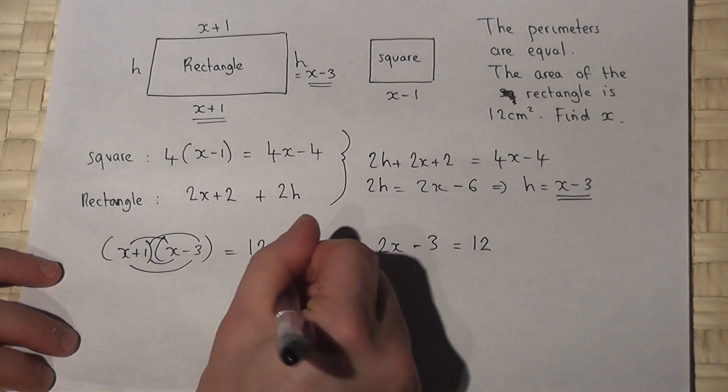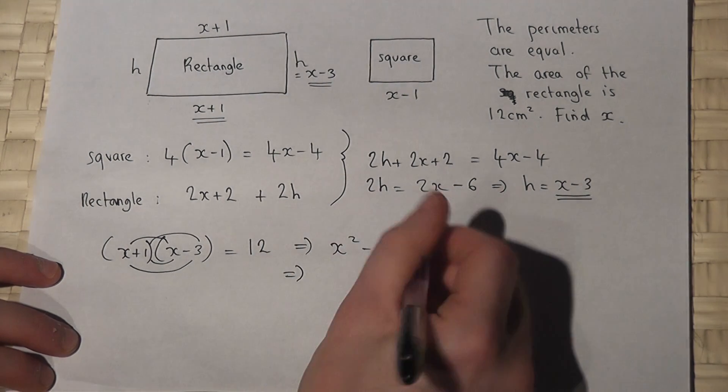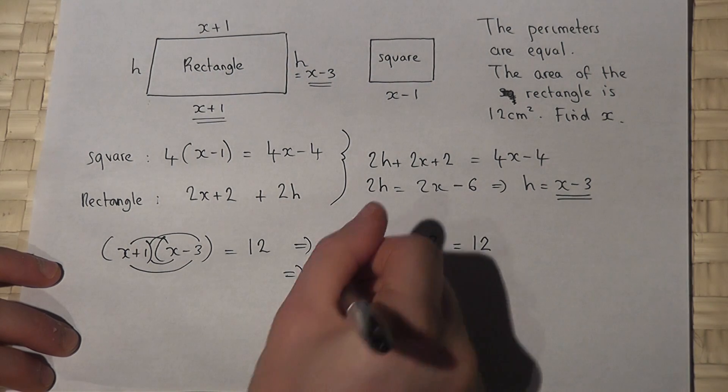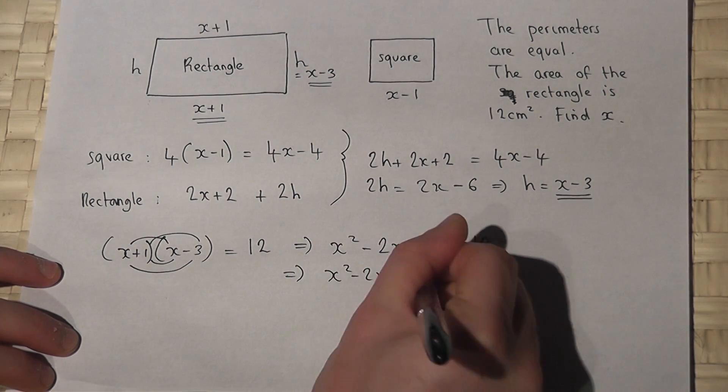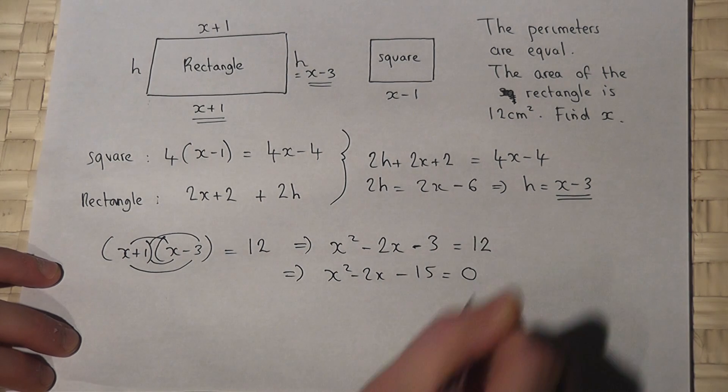So to solve this equation I must make it equal to 0. So I will take away 12. x squared minus 2x minus 15 equals 0.